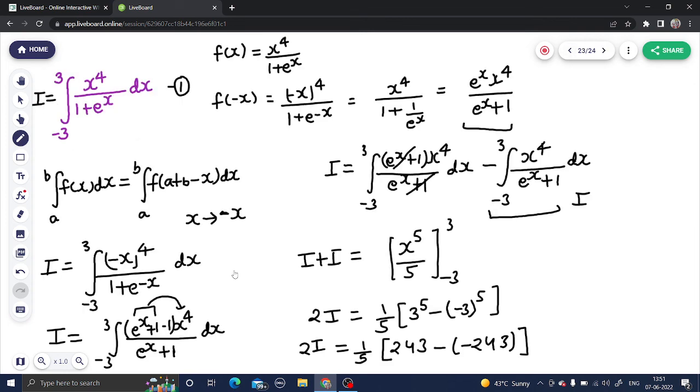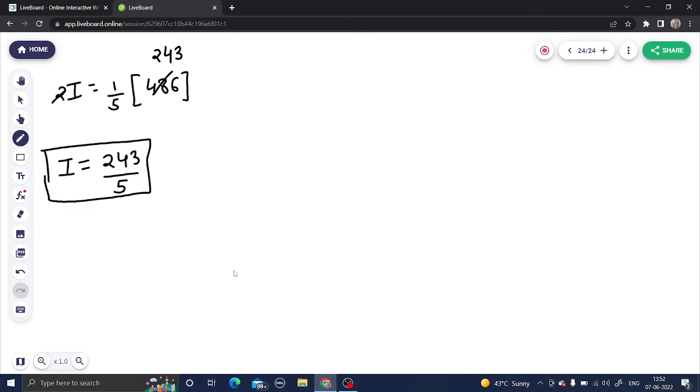This was an important question which appeared in CBSE board 2022. First we tried even odd property that doesn't work in this case. Then we applied the important property which we always use in definite integration and that way it worked. Just a simple adjustment was there plus one minus one. Most of the students stop when they see this expression but a simple adjustment would have done their work easier in examination. That's it from my side. I hope you learned something from this video. Thanks and have a very nice day.